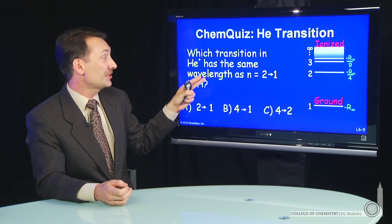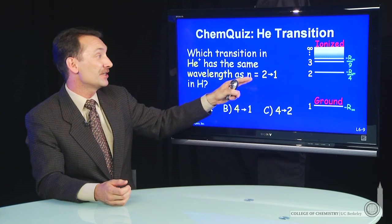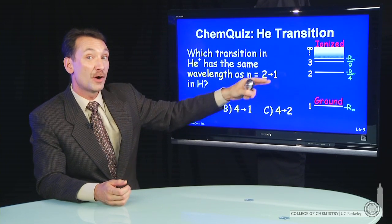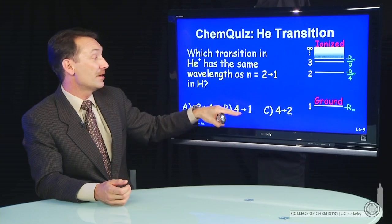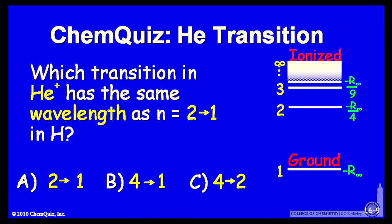So we're going to line up transitions between helium plus and hydrogen. Which transition in helium is the same as 2 to 1 in hydrogen? Is it the 2 to 1, the 4 to 1, or the 4 to 2? Think about that for a minute and make a selection.